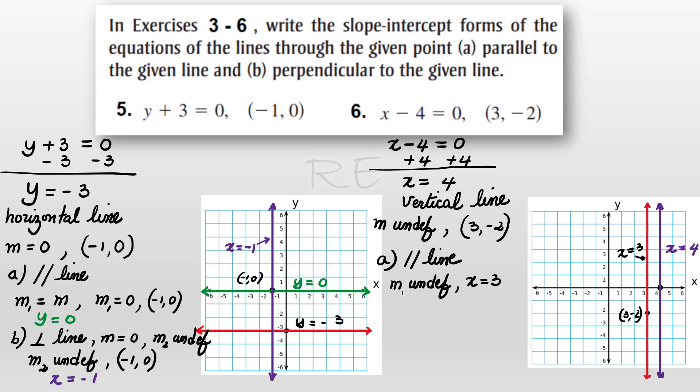For b, we're going to be looking for a line perpendicular to x equals 4. And that line will have a slope of 0. And its equation is y equals negative 2, a horizontal line.